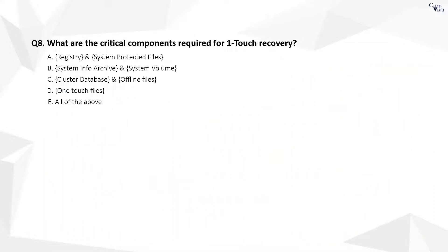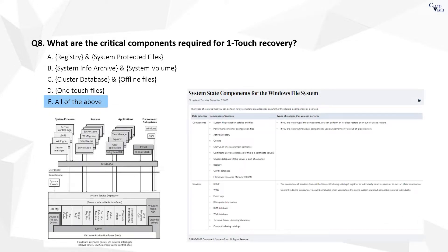Question 8. The correct answer is E. All of these are critical components and are essential and necessary for the operating system to come back after the restore of the system state. If you have excluded any critical system state components from the backup, you cannot use that backup for the one-touch recovery operation.